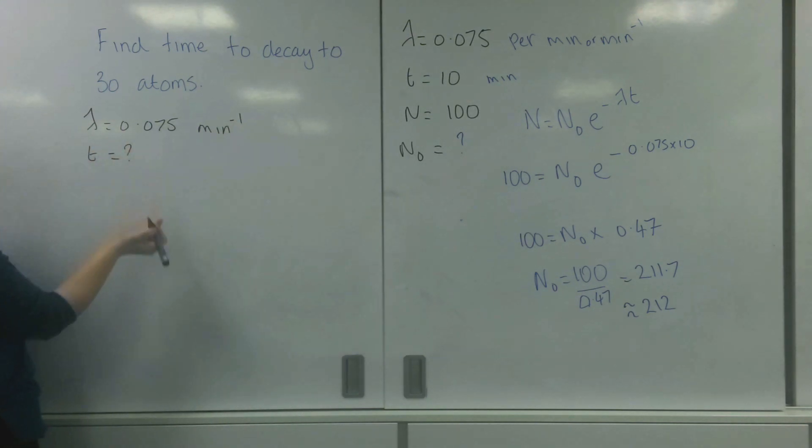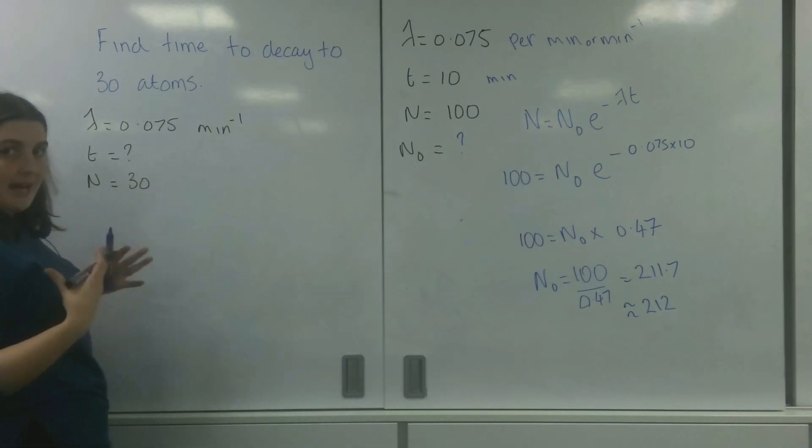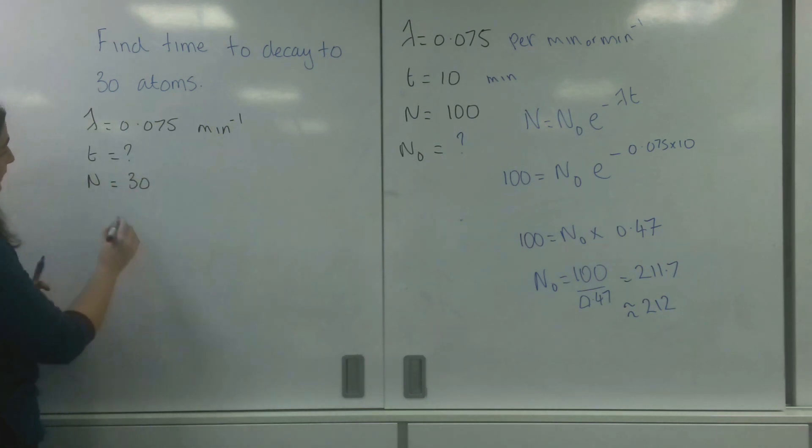My time is I don't know. My n is 30 because that's the amount of atoms I want at this time. And my n naught is 200, and we'll go for 212.